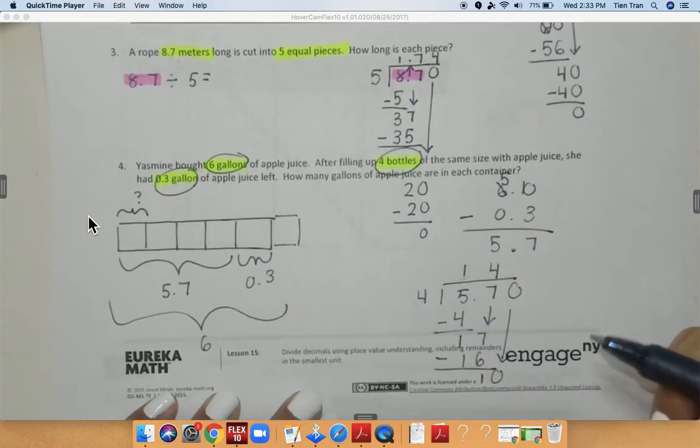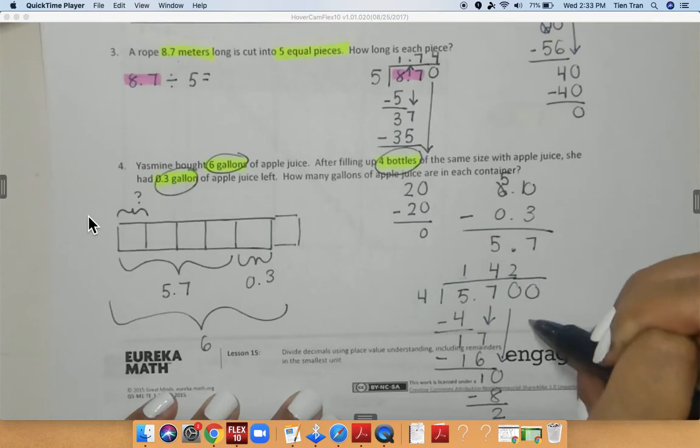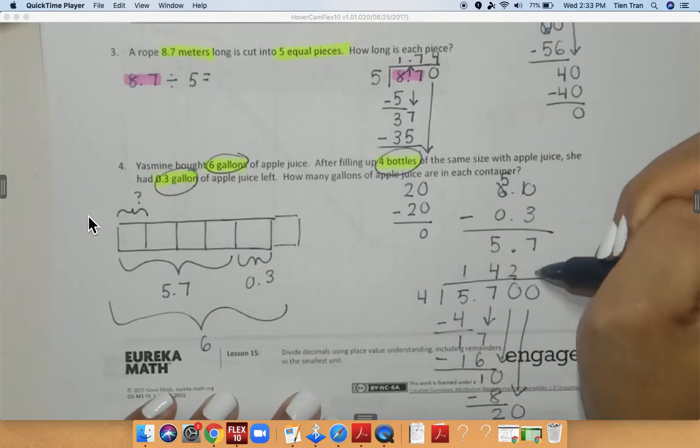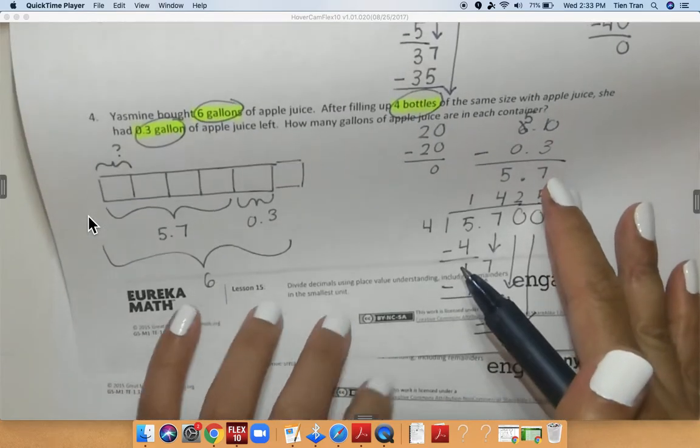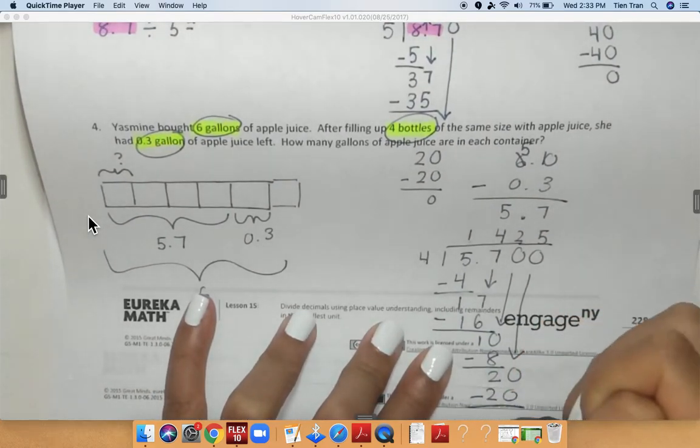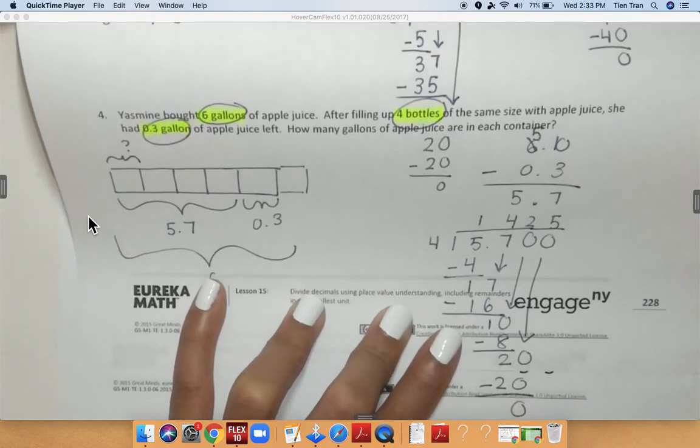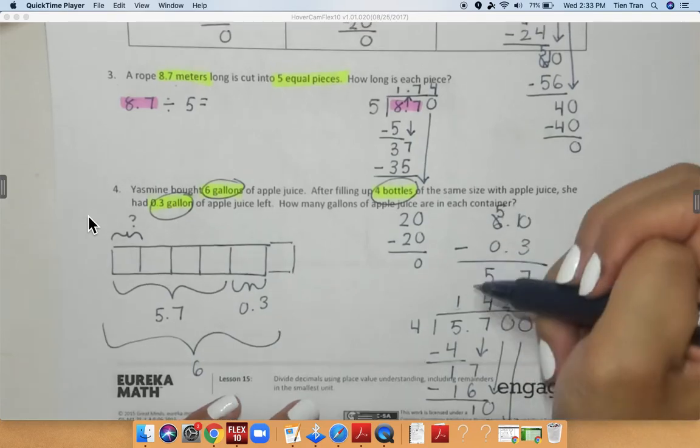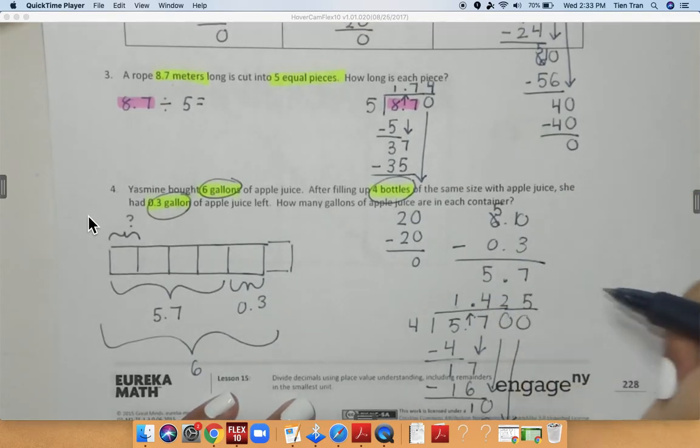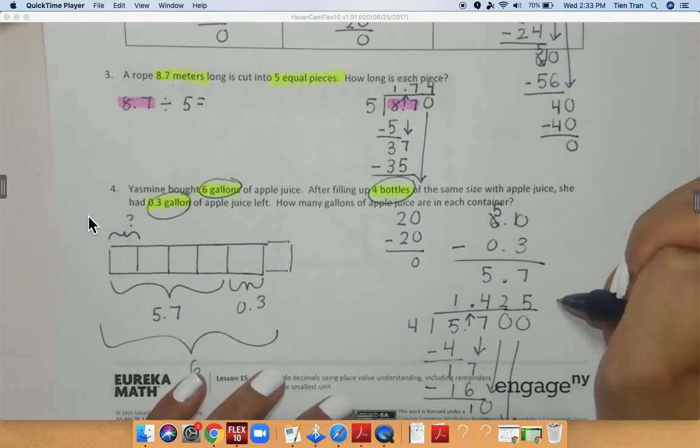4 can go into 10 two times. Subtract. 10 minus 8 is equal to 2. Add another 0. Bring it down. 4 can go into 20 five times. I kind of ran out of space. But if I could keep going, I would subtract 20 minus 20, which is equal to 0. And then I need to make sure that I bring up my decimal right here. So my final answer is 1.425 gallons.